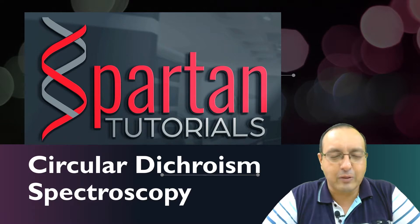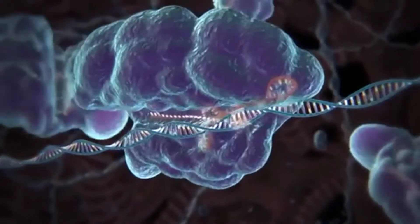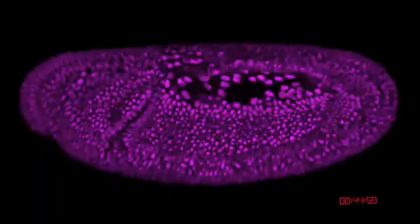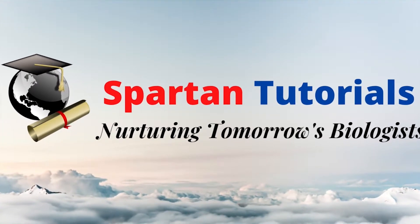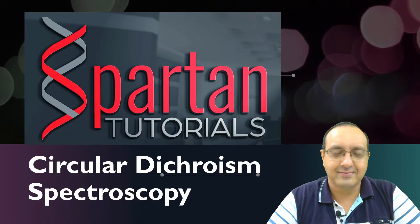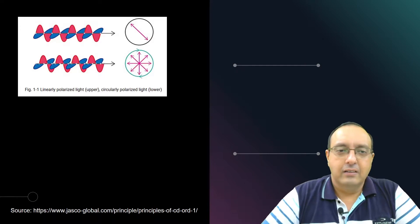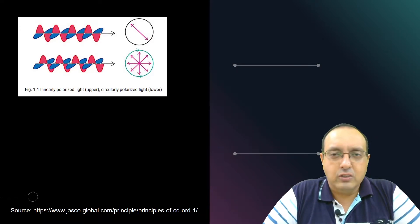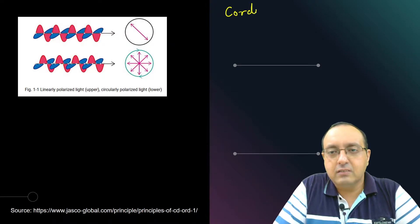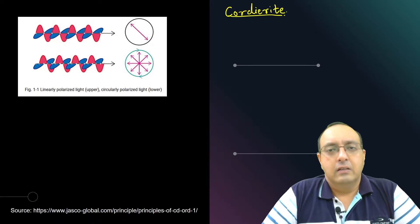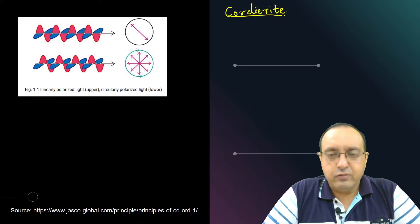So let's get into circular dichroism spectroscopy and see what it is about. The phenomenon of circular dichroism derives from the French word 'cordierite,' which was one of the first minerals to exhibit circular dichroism. The circular dichroism phenomenon derives from linearly polarized as well as circularly polarized light.